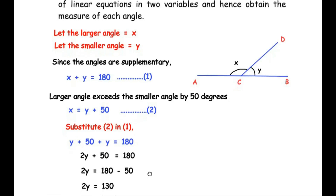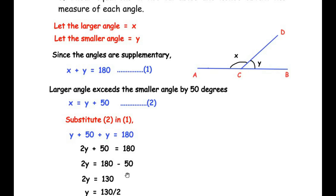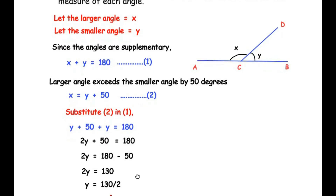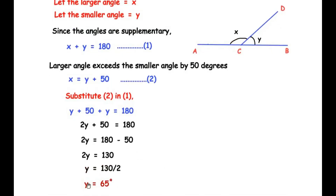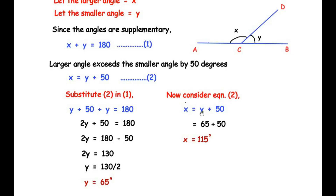Adding like terms: 2y plus 50 equals 180. Taking 50 to the other side: 2y equals 130. Dividing by 2 gives y equals 65 degrees. Now using equation 2 to find x: x equals y plus 50, substituting y equals 65, so x equals 65 plus 50, giving x equals 115 degrees.